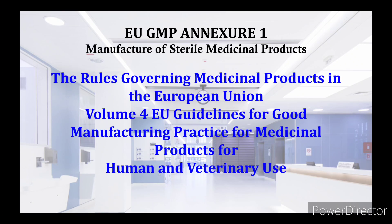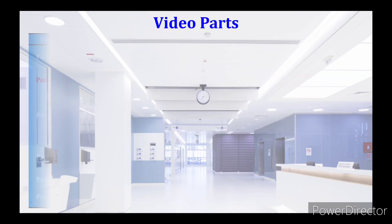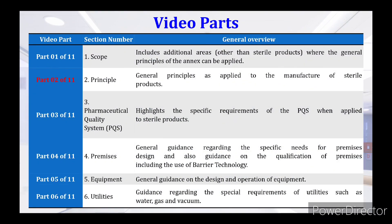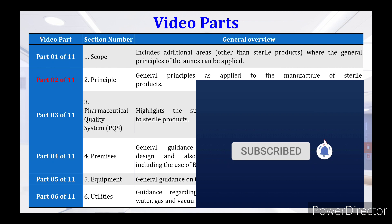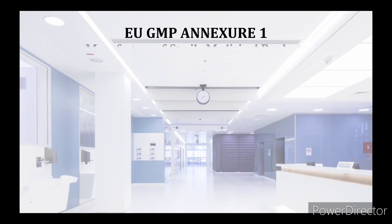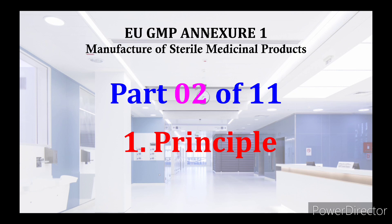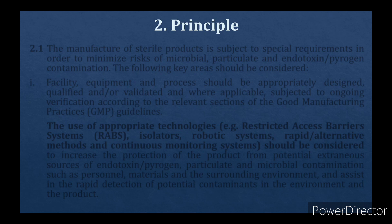EUGMP Annex 1 Manufacture of Sterile Medicinal Products is part of The Rules Governing Medicinal Products in the European Union, Volume 4 — EU Guidelines for Good Manufacturing Practice for Medicinal Products for Human and Veterinary Use. In this video we will discuss Part 2 of 11: Principles — General Principles as Applied to the Manufacture of Sterile Products.